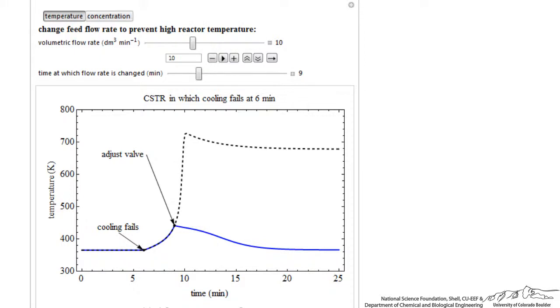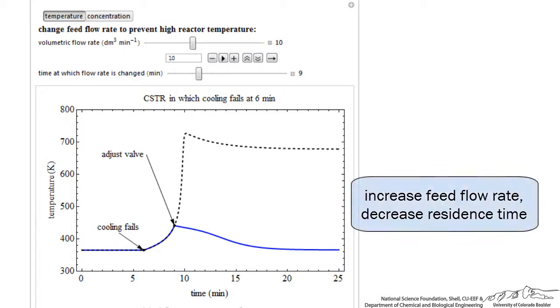If we adjust the valve, make the flow rate five times higher, then we instantaneously essentially stop the temperature rise. We control the reactor. We're basically flushing out, decreasing the residence time for reaction, so having much less reaction taking place.